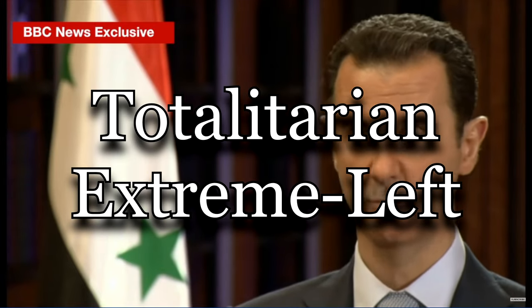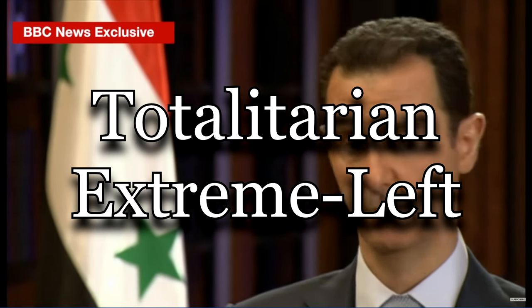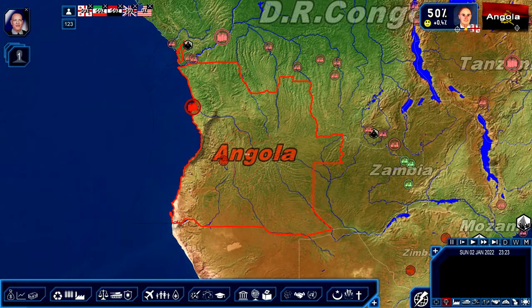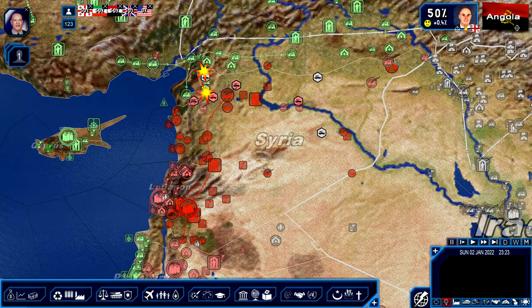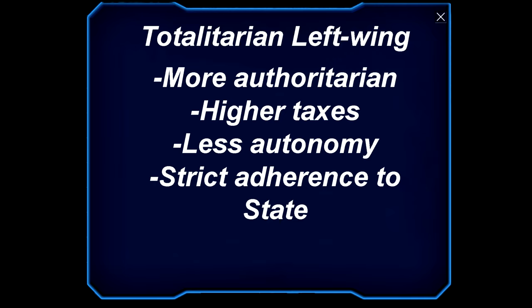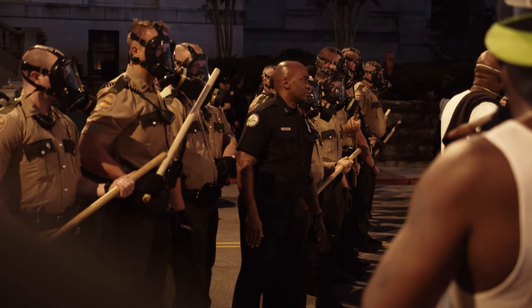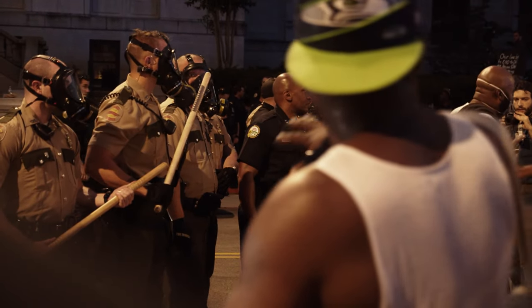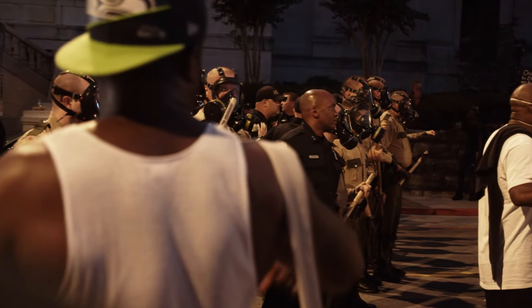Next is totalitarian extreme left, the most extreme left ideology you can find in the game, which can be found in Angola, Eritrea, Burma, and Syria. You'll find that they support higher taxes on middle and high incomes, nationalizations of economic sectors, no homosexuality, no assisted suicide, no cannabis, prostitution controls, strict media control, as well as a strict hold on individual rights. Basically, they support strong state control and even ownership of the economy, as well as strict adherence to state authority in general. An example of this would be the Burmese government, which in February 2021 was overthrown in a coup and is now led by the military.